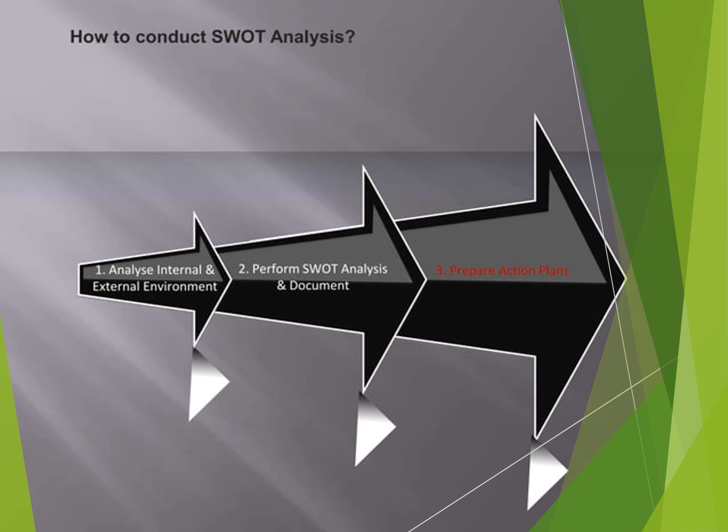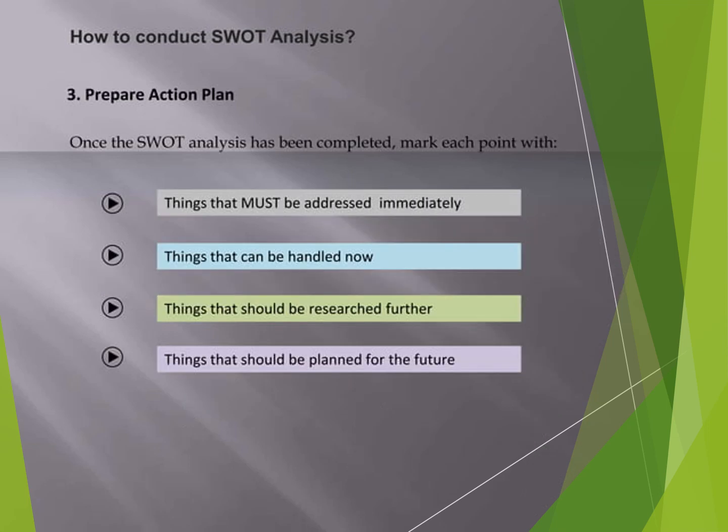The third step is preparing an action plan for the SWOT analysis. When making a plan, there are four categories: things that must be addressed immediately, things that can be handled now, things that should be researched further, and things that should be planned for the future. On a priority basis, we handle them one by one.